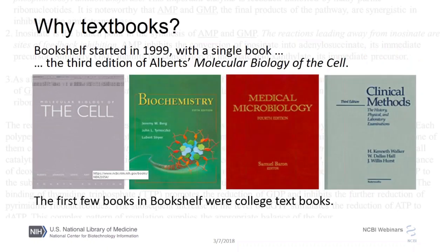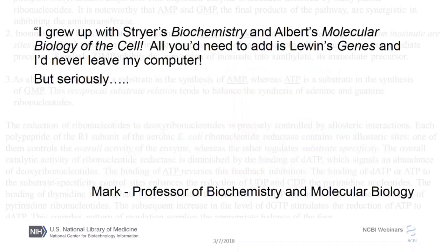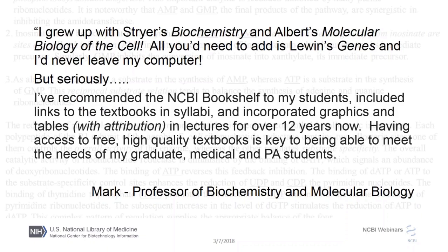In addition to Molecular Biology of the Cell, several other extremely popular textbooks were added early on, including Berg, Tymoczko, and Stryer's Biochemistry fifth edition, Barron's Medical Biochemistry fourth edition, and Walker, Hall, and Hearst's Clinical Methods third edition. All of these are considered classic textbooks, which continue to be well-regarded and still used today. One professor teaching graduate and professional level life science and clinical courses mentioned: 'I grew up with Stryer's Biochemistry and Alberts' Molecular Biology of the Cell. I've recommended the NCBI Bookshelf to my students and incorporated graphics and tables with attribution in lectures for over 12 years. Having access to free, high-quality textbooks is key to meeting the needs of my graduate medical and PA students.'